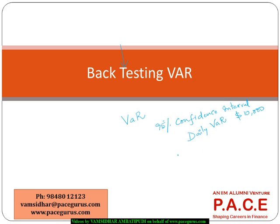Logically, it means that there are only 5% chances that on any one single day my loss will exceed 10,000 dollars. This VAR that has been computed has to be tested in the real world. This mechanism of testing uses the actual number of exceptions.